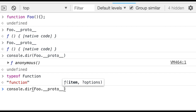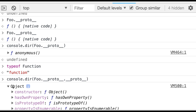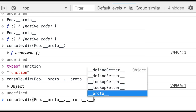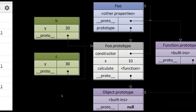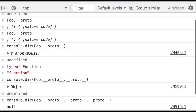And if you do __proto__ again, it will point to null. So this is what I am trying to show: foo is a function whose proto will point to the Function prototype, whose proto will point to the Object prototype, and whose proto will point to null. This is our function.